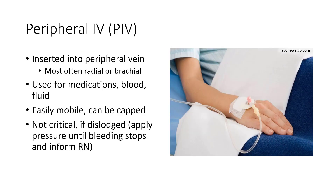The most basic line you'll encounter is a peripheral IV, referred to as PIV. It's inserted into a peripheral vein, most often the radial or brachial, and is used for delivery of medications, blood, or fluid. It's easily mobile and can be capped. It's not super critical if it's dislodged — you're going to apply pressure, maybe elevate the arm depending on your facility guidelines, and most importantly, inform the RN. Since it's in the vein, it's typically not a life-threatening situation, but you want to stop the bleeding and close the site to prevent infection.